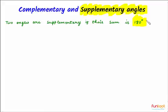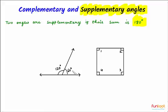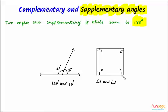Let's see some examples. This angle here is 120 degrees and this is 60 degrees, and if we add them up, it becomes 180 degrees. So 120 degrees and 60 degrees — this pair of angles is supplementary. Here we have taken a square, and we know that in a square all the angles are 90 degrees. So if we take any pair — angle 1 and angle 3 add up to 180, angle 2 and angle 4 also add up to 180. All pairs in this square are supplementary angles.